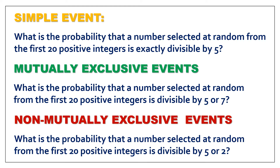And the last one, non-mutually exclusive events. What is the probability that a number selected at random from the first 20 positive integers is divisible by 5 or 2? From numbers 1 to 20, there will be common outcomes — numbers divisible by both 5 and 2. Like 10, which is divisible by 5 and also by 2, and 20 as well. That's why this is non-mutually exclusive events — there are outcomes which are common.